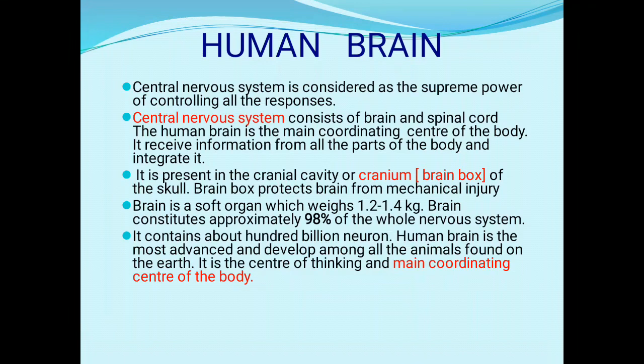The central nervous system, short form CNS, consists of the brain and spinal cord. The human brain is the main coordinating center of the body. It receives information from all parts of the body and integrates it. The brain is present in the cranial cavity, which protects it from mechanical injury. Brain weight is 1.2 to 1.4 kg, and it constitutes approximately 98% of the whole nervous system.